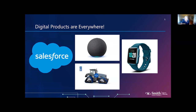You might think about digital products as software products — Salesforce is a great example, a huge platform of different services we can use to run our business. And then we have digital elements being added to physical products, like the smart tractor — taking existing products and embedding digital capabilities to make them smarter or to maintain them better. Everywhere you look, things are being digitalized.